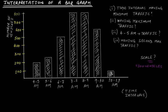The first question asks: which time interval has the minimum traffic? Looking at the height of each bar, the bar between 10 to 11 am clearly has the lowest height, and it comes against the number 100. So 100 vehicles is the traffic between 10 to 11 am, making it the time interval with minimum traffic.